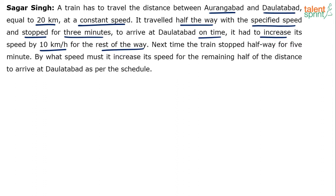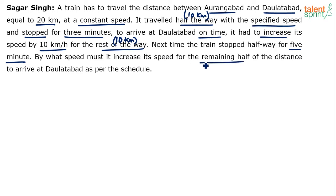It travelled the first 10 km, and the rest of the way means the other 10 km, since the total distance is 20 km — half is 10 and the other half is 10. Next time, the train stopped halfway for 5 minutes, compared to only 3 minutes in the first case. By what speed should it increase its speed this time so that the remaining 10 km can be covered as per the schedule and it arrives at Dalatabad on time?